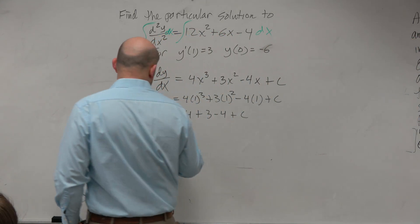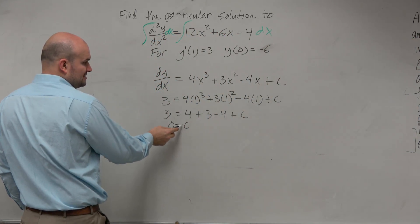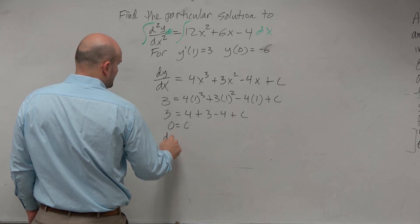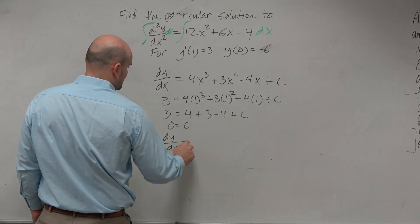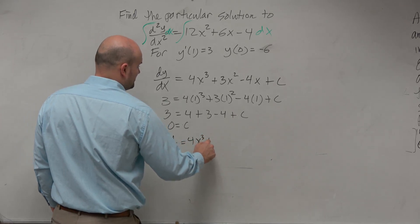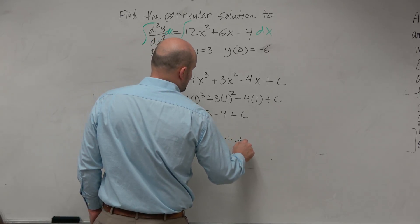So therefore, now in this equation, I can just replace this with dy/dx equals 4x³ plus 3x² minus 4x.